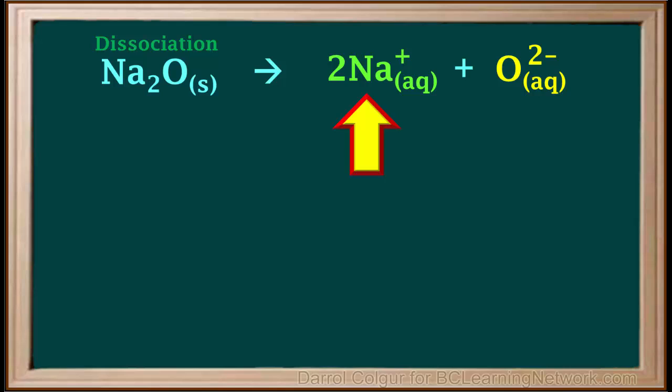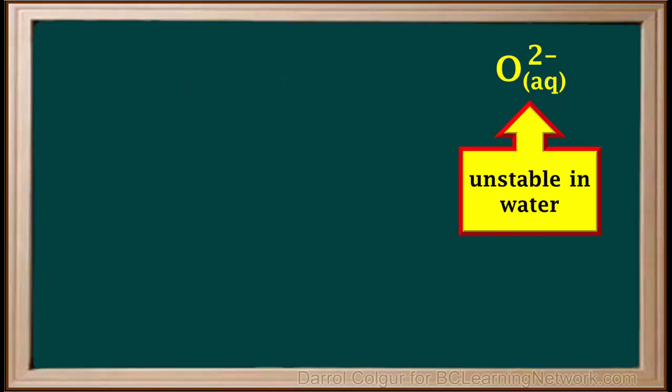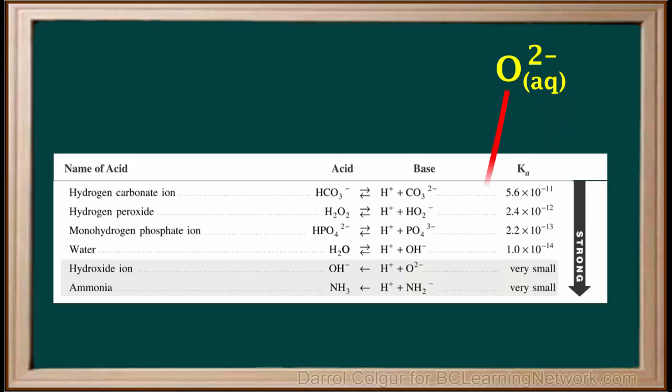Sodium ions are neutral spectators, so we'll discard them here, leaving us with the oxide ion, O2-. But the oxide ion, O2-, is unstable in water. It is near the bottom of the right side of the acid table, so it is a very strong base.